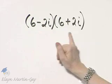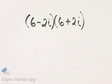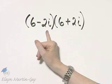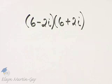For this exercise, we are multiplying two complex numbers. If you'd like, you can think of this as a binomial and think of this as a binomial, and just use the FOIL order for multiplying.